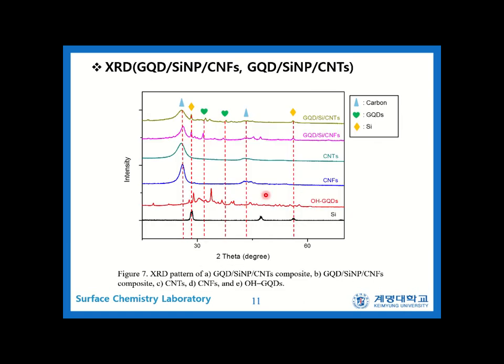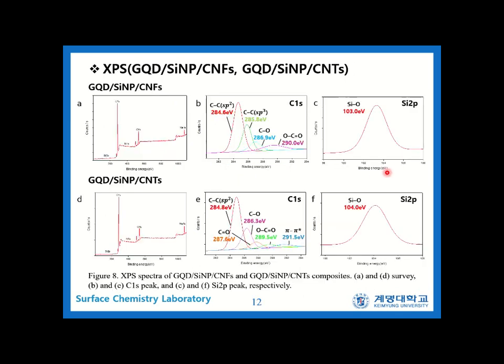In figure 7, there are carbon characteristic peaks at 27 and 44 degrees, OH-GQD peaks at 32 and 38 degrees, and silicon peaks at 28.4 and 56.1 degrees. So we confirmed that the synthesized composites consist of OH-GQDs, silicon, and carbon nanomaterials.